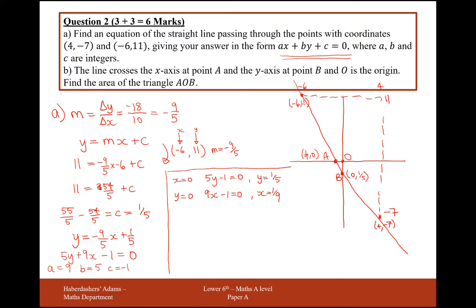What we've got here now is a base times height divided by two situation, so area of AOB is going to be equal to 1/2 of the base, which is 1/9, times the height of the triangle, which is 1/5. So the total area of this triangle here is 1/90 units squared.